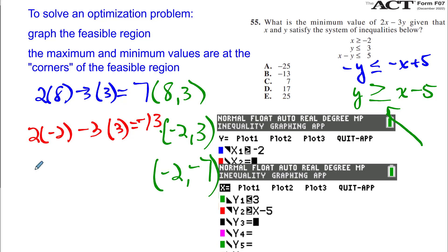And then finally, 2 times the negative 2 minus 3 times the negative 7. And that will be negative 4 plus 21, which is positive 17. So this is the maximum, but what we want is the minimum. And so our answer is B.